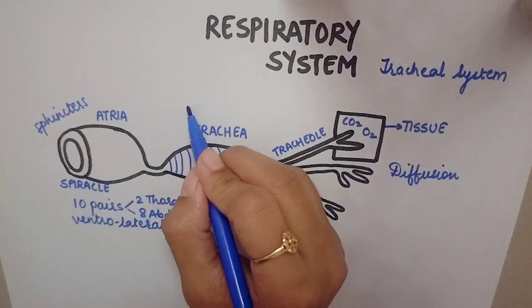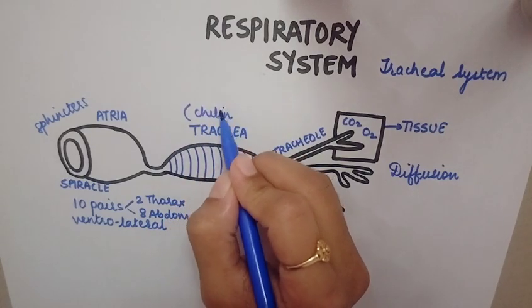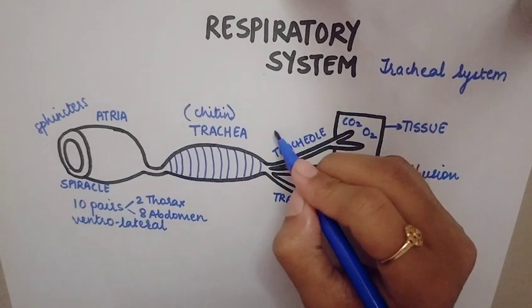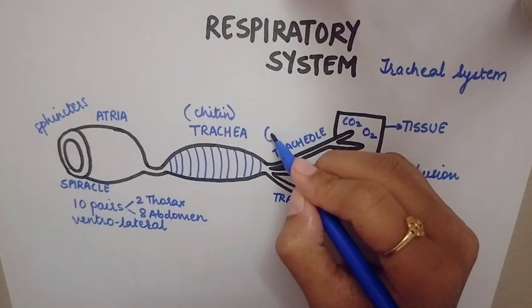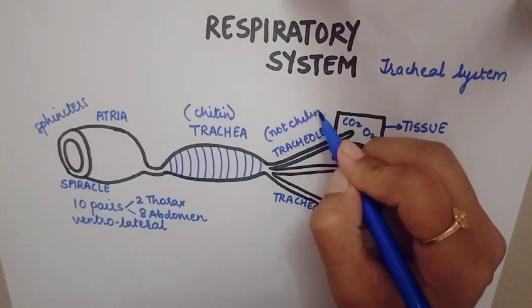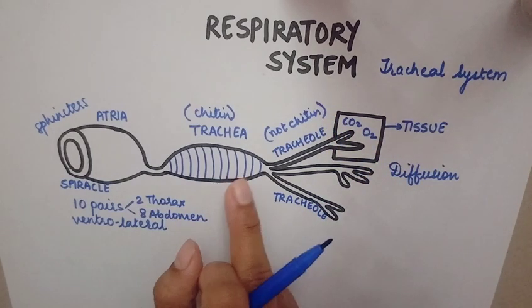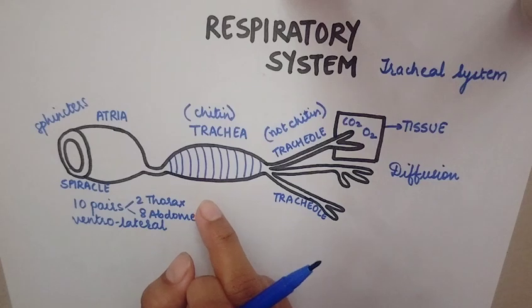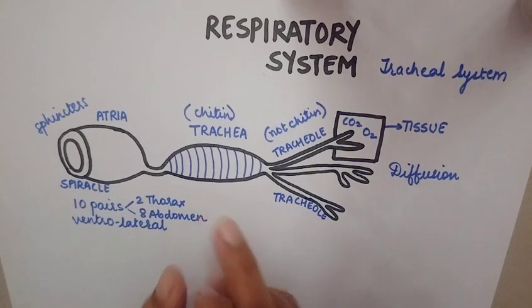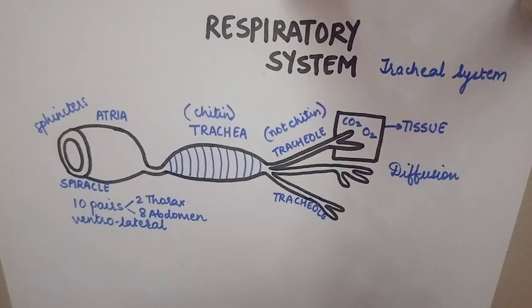One important thing to remember: the trachea is lined by chitin. The tracheole does not have a chitin lining. This is one key difference between the trachea and the tracheole — the chitin lining in the trachea functions to prevent it from collapsing.